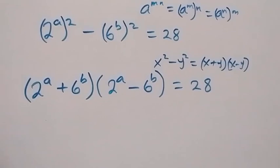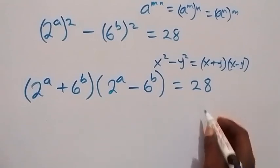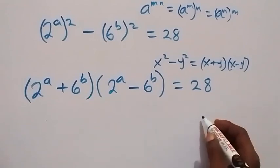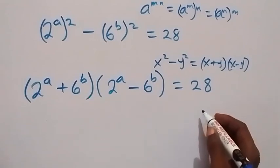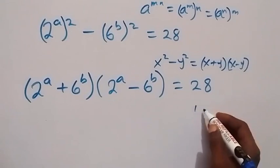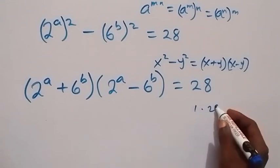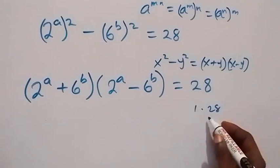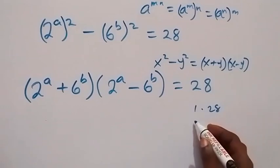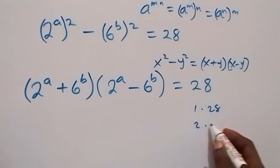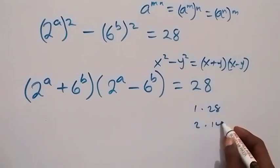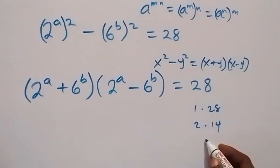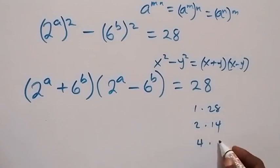Now this 28 we can write as 1 times 28, or 2 times 14, or 4 times 7.